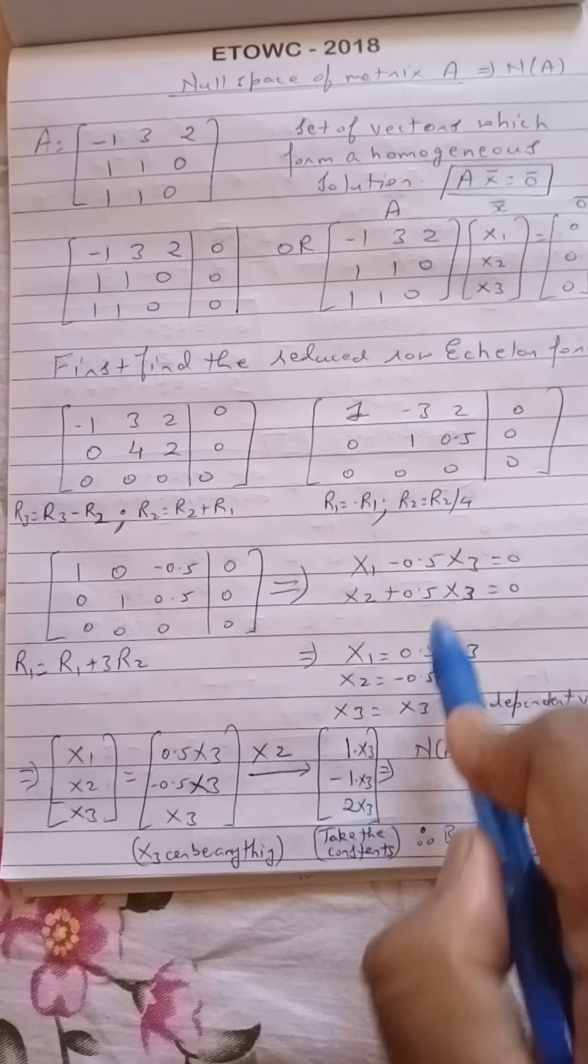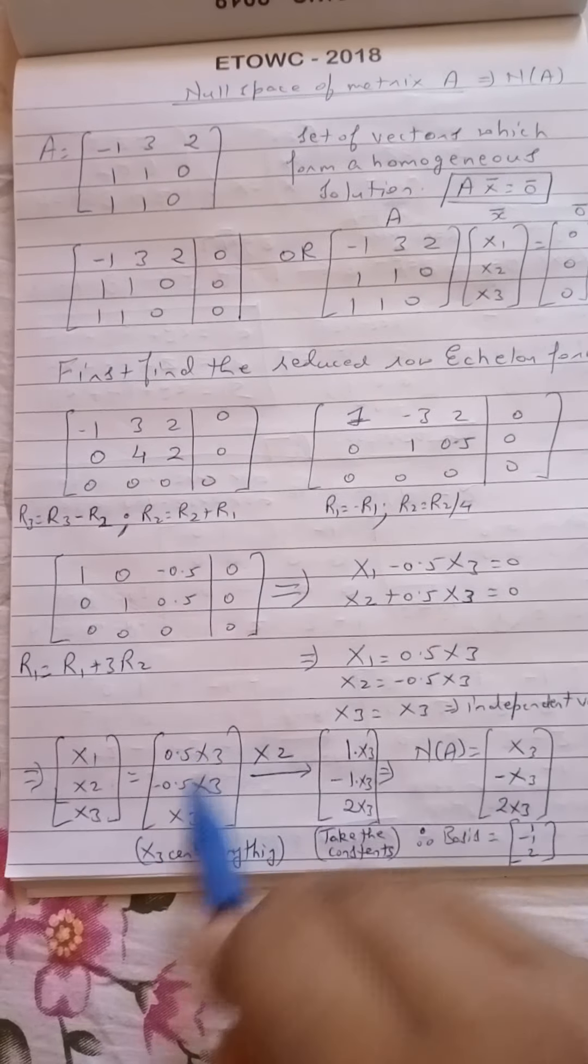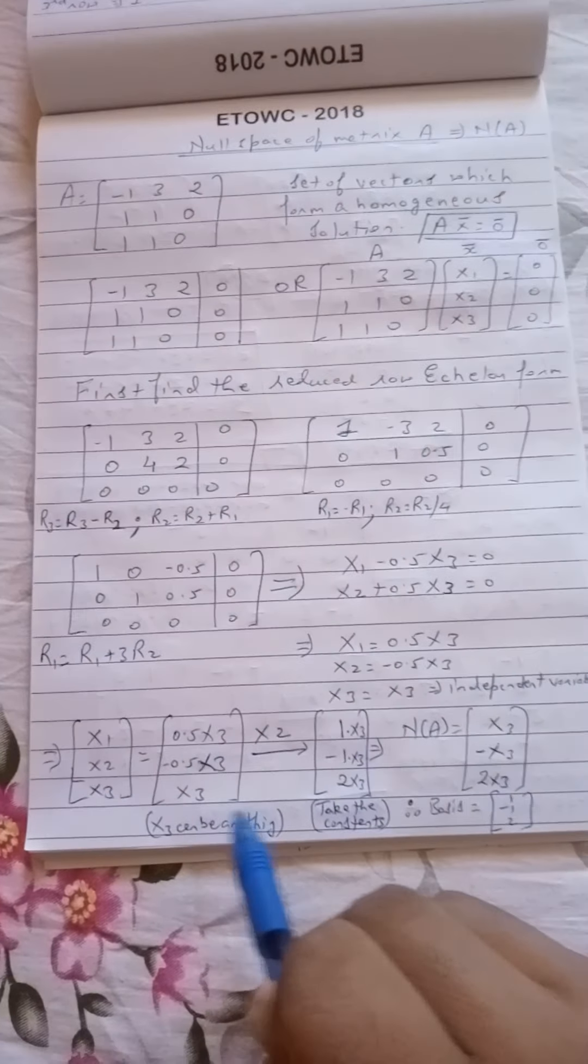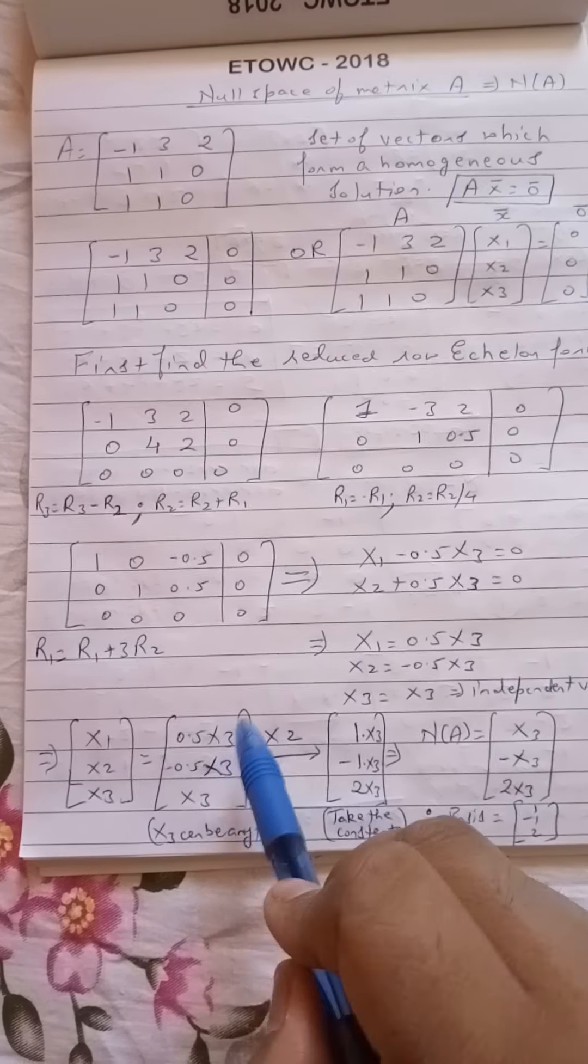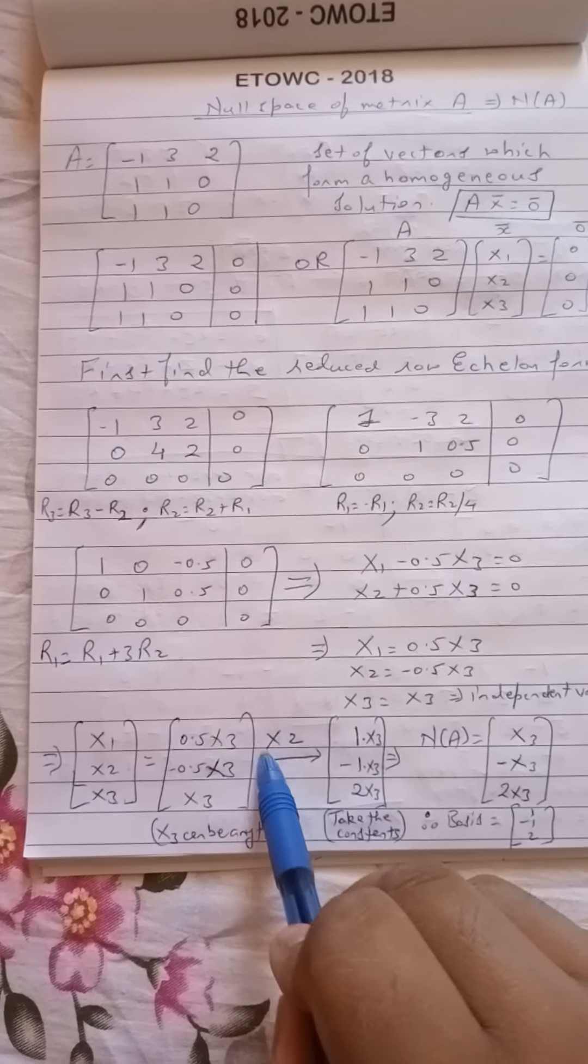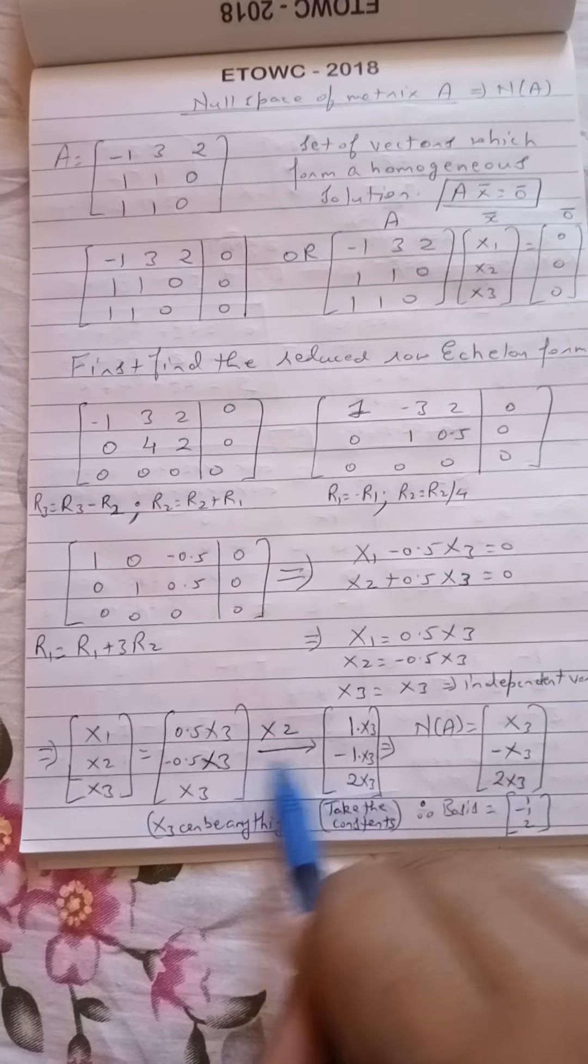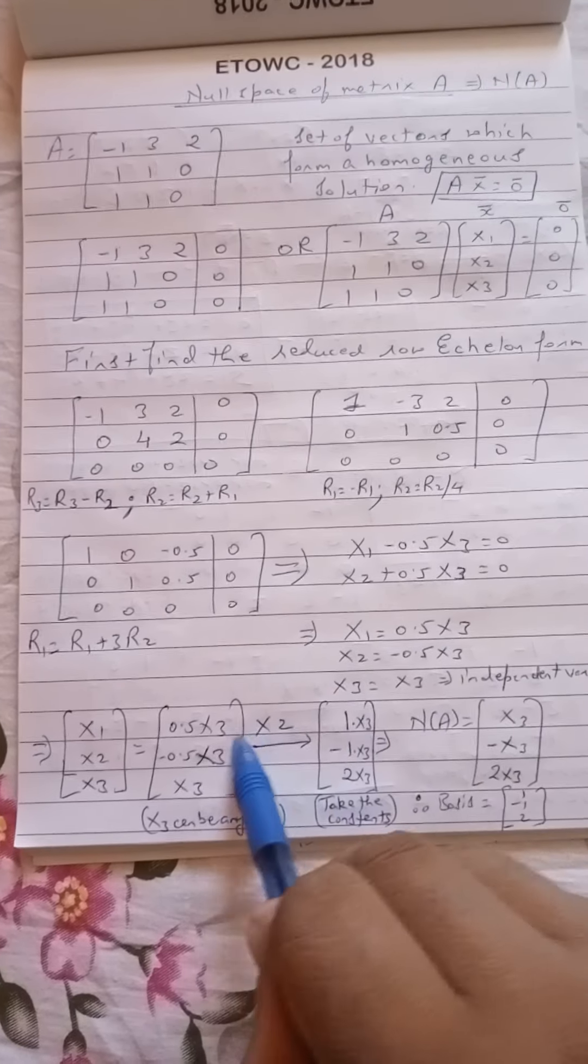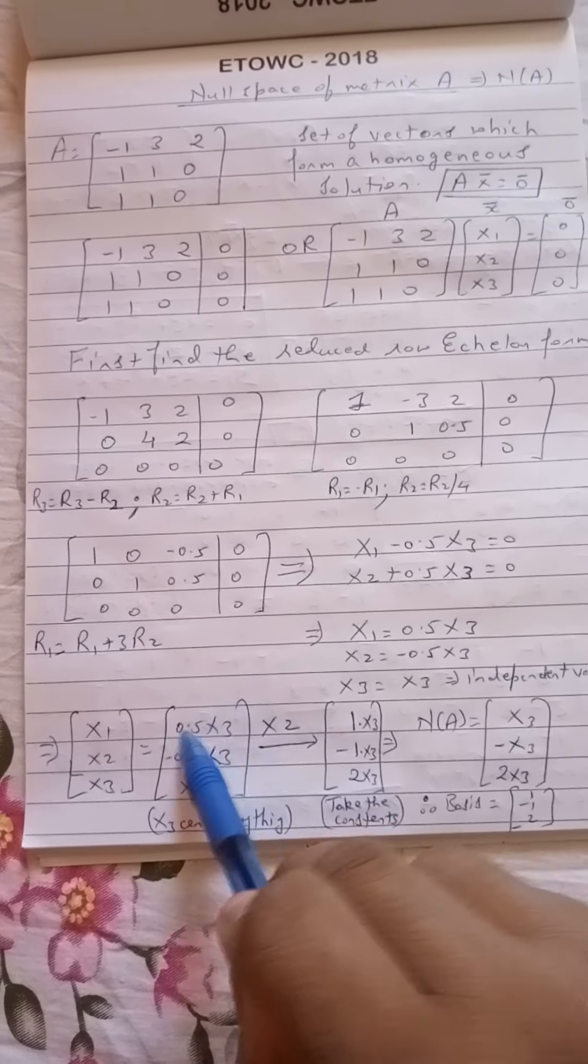So therefore I write this matrix X1, X2, X3 equal to: now I write this in a matrix form on the right hand side 0.5 X3, minus 0.5 X3, and X3. Now here we must understand that X3 can be anything. It is only for our understanding we have written it as X3.